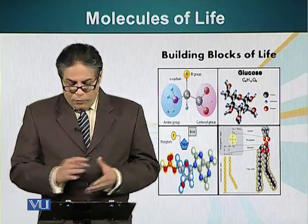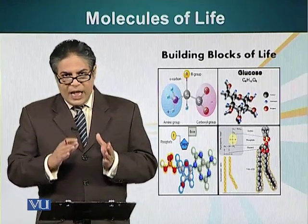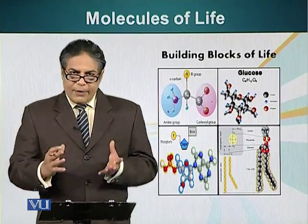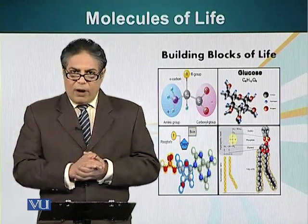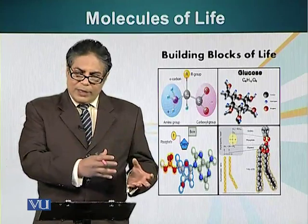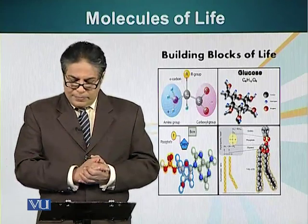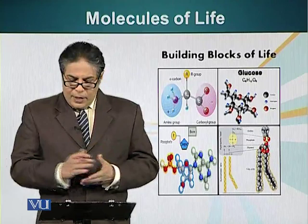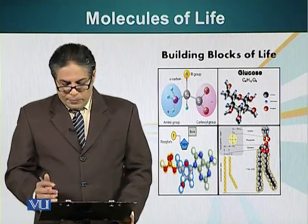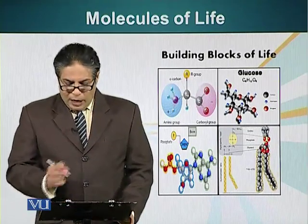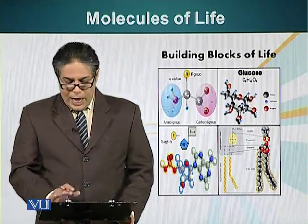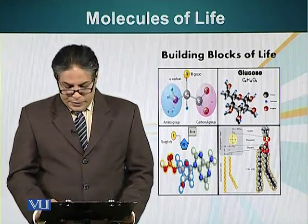Carbohydrates have a general formula of CH₂O. You can think of these molecules as hydrated carbons — carbon atoms with hydrogen and oxygen. Here we have a structure of a glucose molecule. The black balls are the carbon atoms, the red are the oxygens, and the blue are the hydrogen atoms.